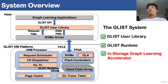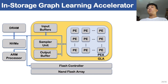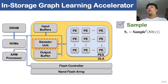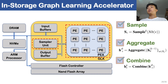Finally, let's talk about the in-storage graph learning accelerator. Performing graph learning workloads in the resource-limited SSD is a big challenge. To address this, we implemented a high-performance graph learning accelerator in the GLIST design, which is able to handle commonly used operators in graph neural networks. The sample operator is handled by the sampler unit, and the aggregate operator and combine operator are handled by the PEN.